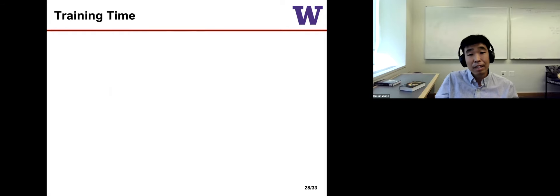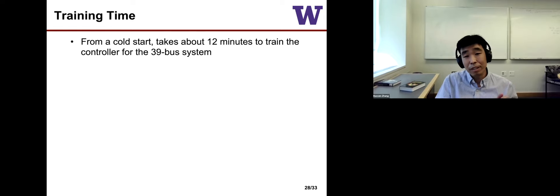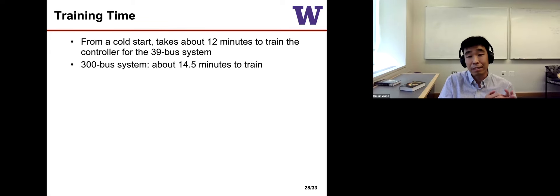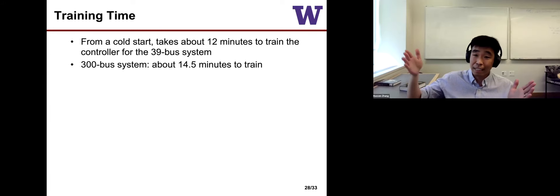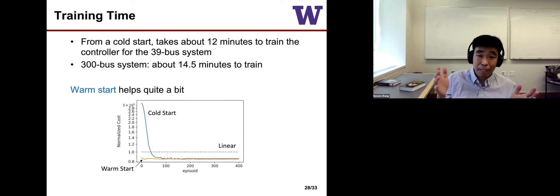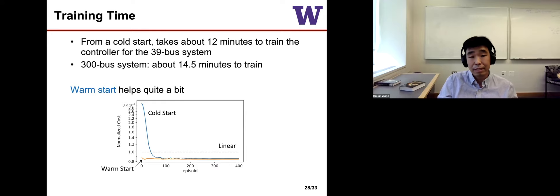Regarding training time, we were initially concerned it would take very long for large systems. It takes about 12 minutes to train the 39-bus system. Training a 300-bus system doesn't take much longer — training time scales mainly with the number of discretization time steps, not system size. Warm-starting also helps dramatically.